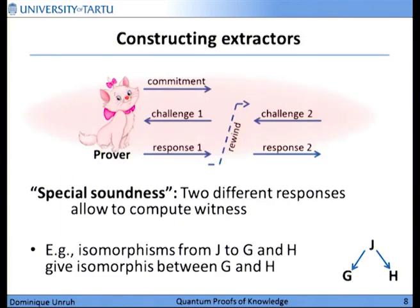Let's see how this property is usually proven in the classical case. We are given a prover that outputs the first message called commitment, gets a challenge, and answers with a response. A typical technique is: we run an interaction with the prover where the simulator sends the messages that would usually come from the verifier. Then when we reach the end, we go back — we rewind to the point just after getting the commitment from the prover — and then we send him another challenge and get another response.